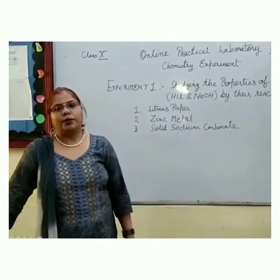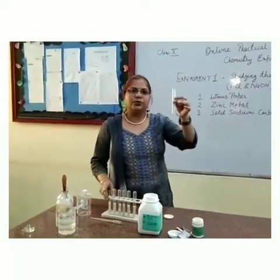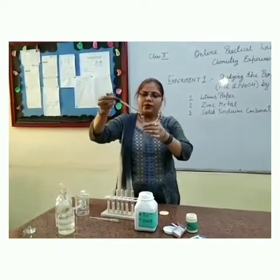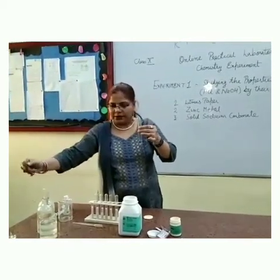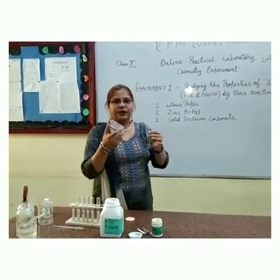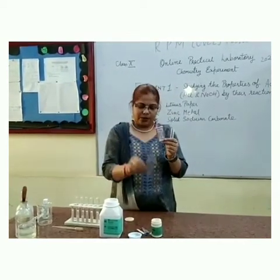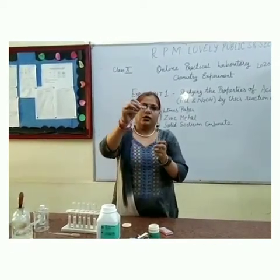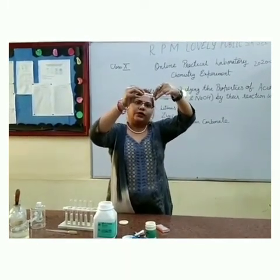Here we have to check the properties of acid and base. First of all, we take a test tube, and with the help of a dropper, we will add a few drops of hydrochloric acid. Now we will take litmus paper — we have two litmus papers: red litmus paper and blue litmus paper. We will put a small paper strip in this test tube to check what change occurs.